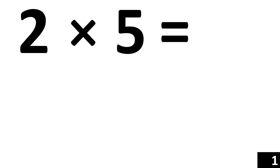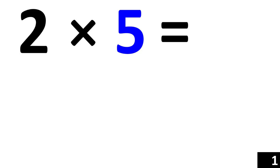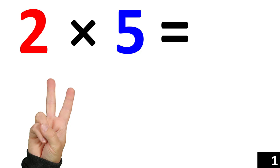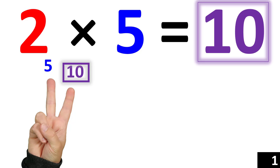The first example is 2 times 5. 2 times 5 is the same thing as counting by 5 two times. 5. 10. So we see that 2 times 5 is equal to 10.